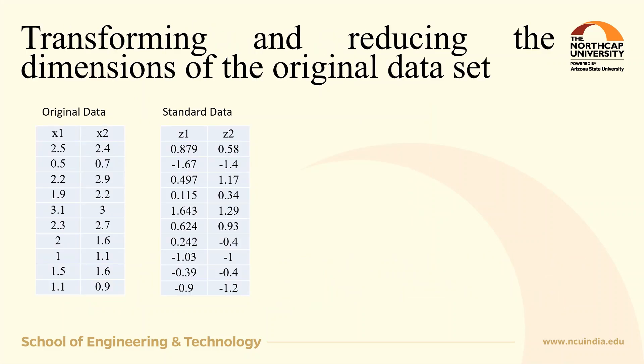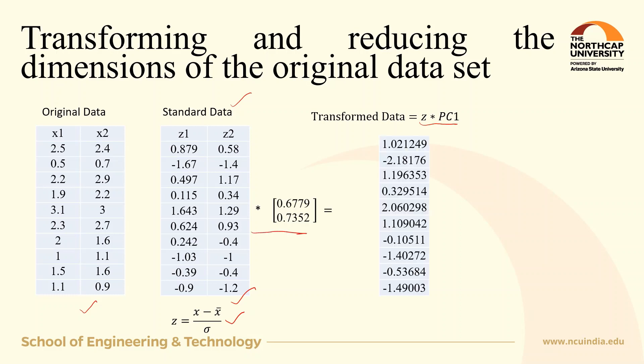Let us understand the transformation and reducing the dimensions of the data. From the original data set, we obtain the standardized data set using this formula. To transform it into one dimension using only the first principal component, you multiply the standardized data with the first principal component, and by matrix multiplication, you will get the one-dimensional data.